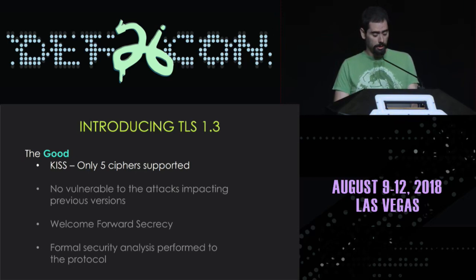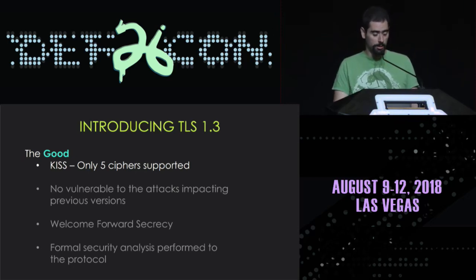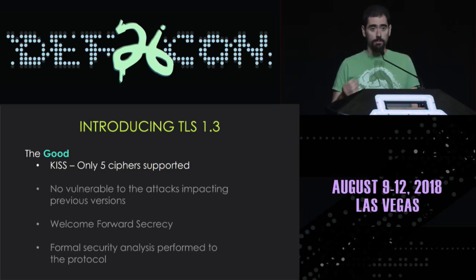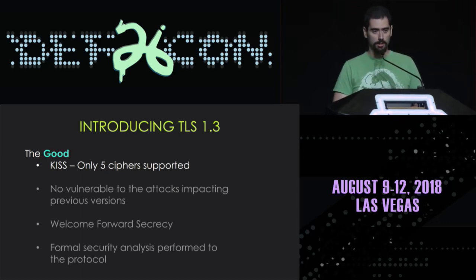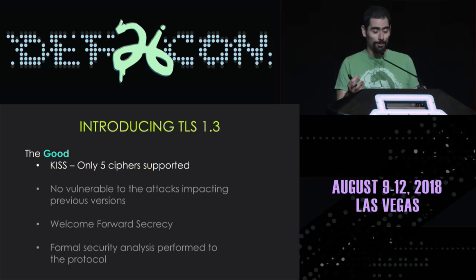Now let's move on to some of the good things that TLS 1.3 is going to bring us. One good thing is that it has followed a keep-it-simple approach: only five ciphers are going to be defined in the TLS 1.3 specification. That means the implementation will be easier and will reduce protocol complexity — a huge improvement compared to previous versions which supported dozens of ciphers.